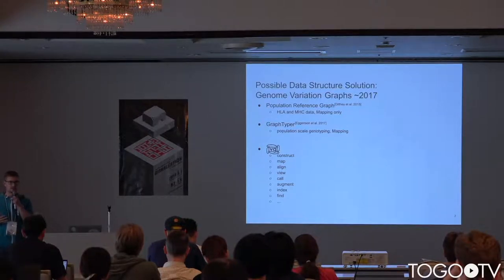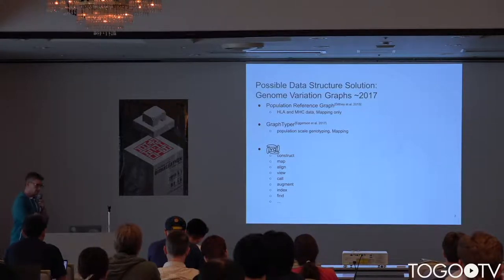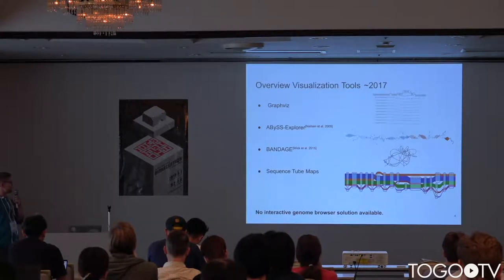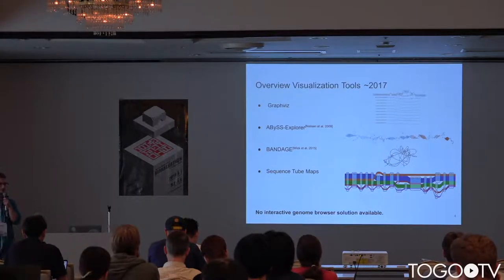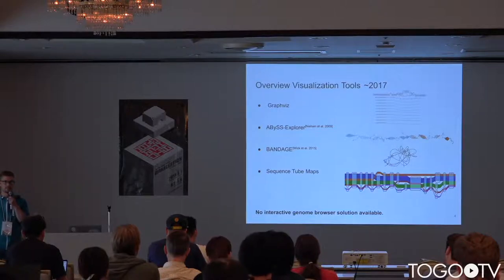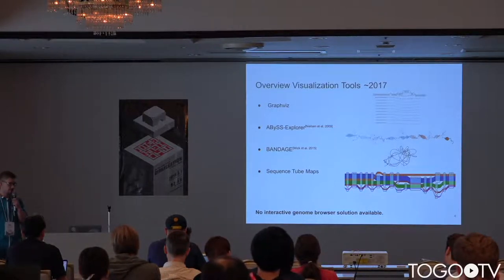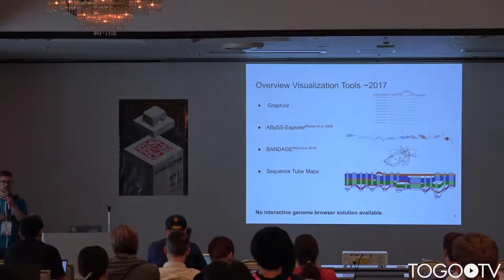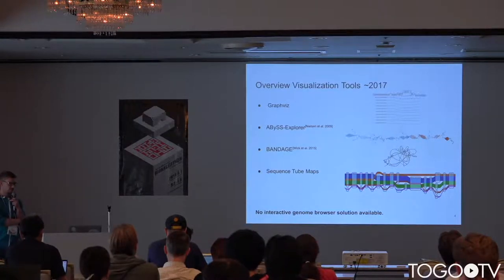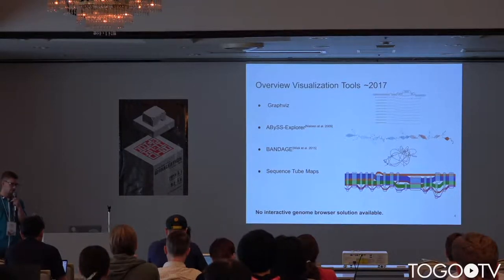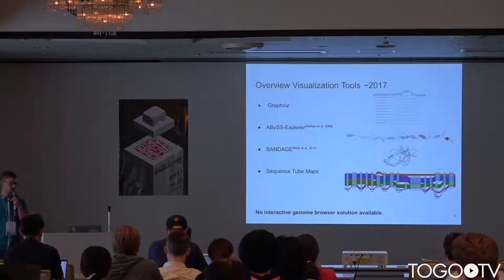However, when we have such a data structure, we also want to inspect it and take a look at it. At that time, there was also a lack of such tools. There was GraphViz, which was able to render static pictures via VG view. And there were some graph assembly browsers out there, but those are not really applicable to take a closer look at graph genomes. There was also sequence tube maps, which is a JavaScript library, but there was no solution for an interactive genome browser.